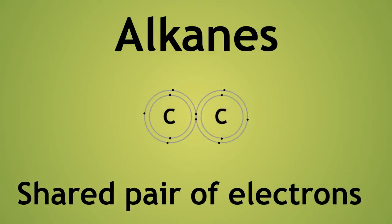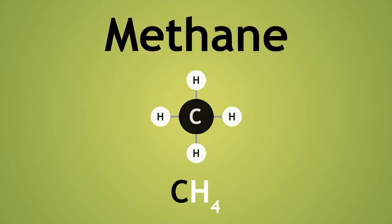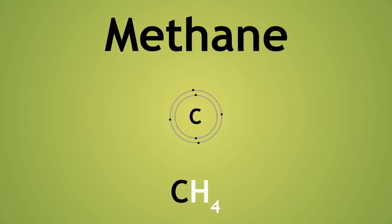Let us take our first alkane in the series, methane, CH4. Carbon has 6 electrons in total, 4 of these being in the outer shell. Carbon, therefore, always needs 4 more covalent bonds to be stable. In methane, the 4 hydrogen atoms have only 1 electron and so covalently bond to the carbon atom, each sharing a pair of electrons.